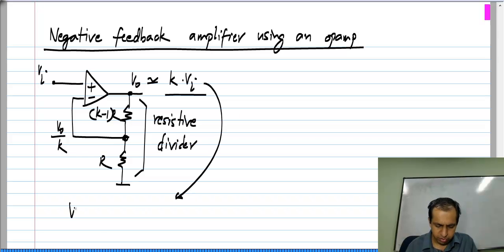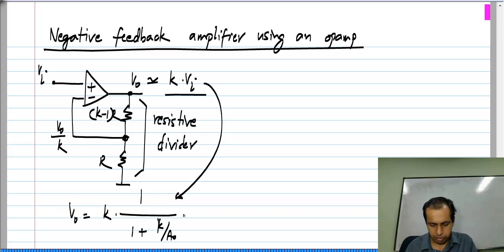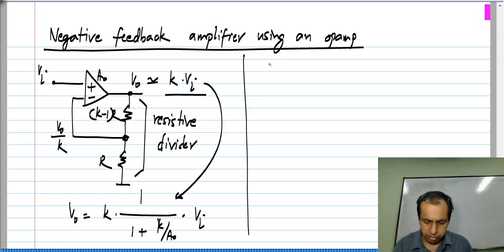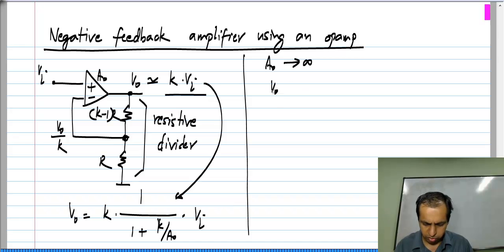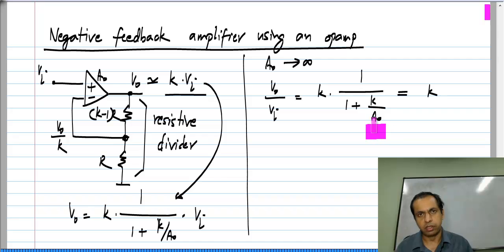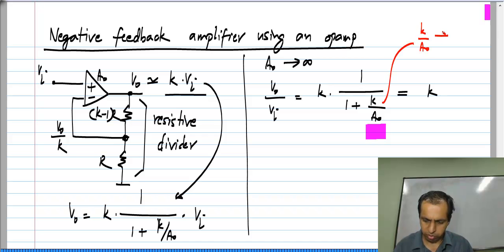To be exact, V_naught equals k times (1 / (1 + k/A_naught)) times V_i, where A_naught is the op amp gain. If we take the limit of A_naught tending to infinity, we see that V_naught/V_i equals k times (1 / (1 + k/A_naught)), which is exactly equal to k, because k/A_naught goes to 0 as A_naught tends to infinity.